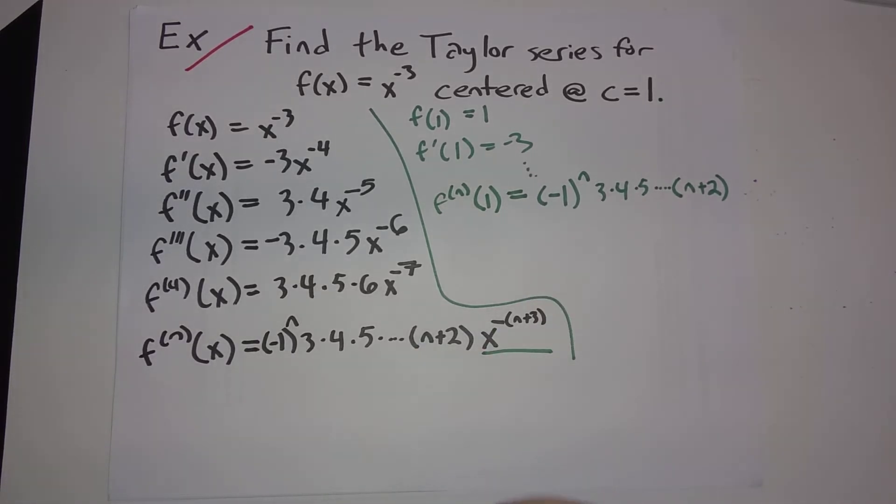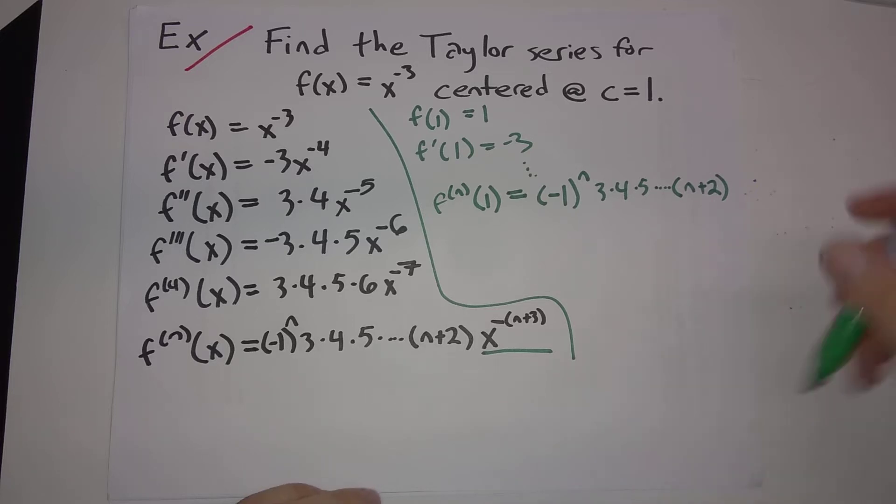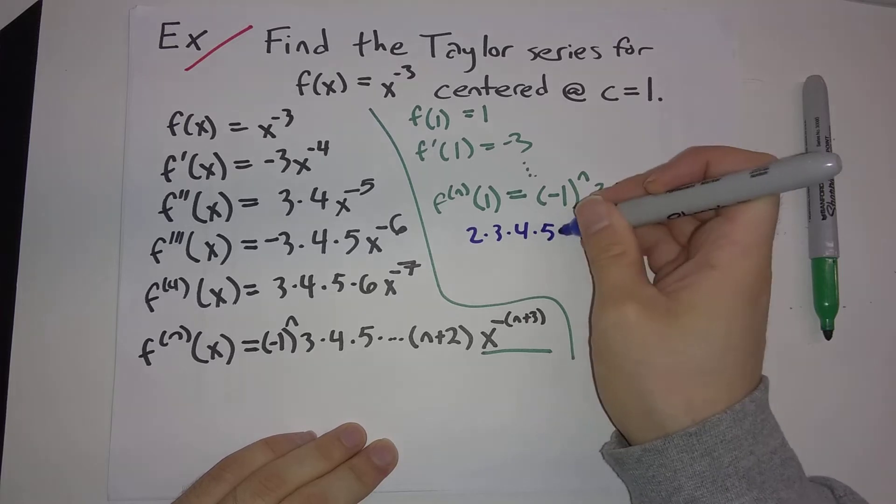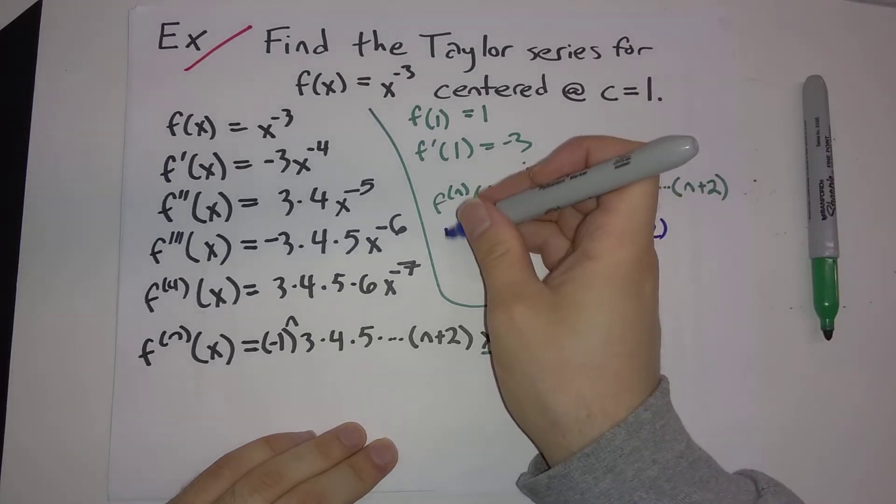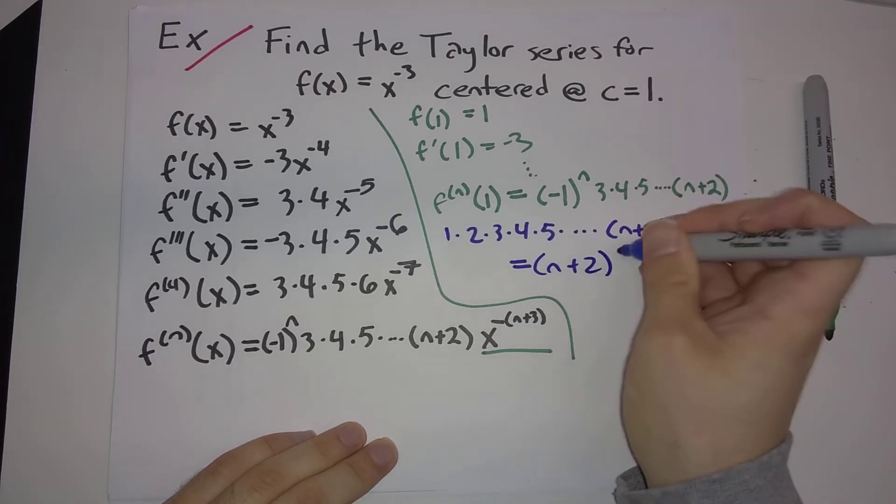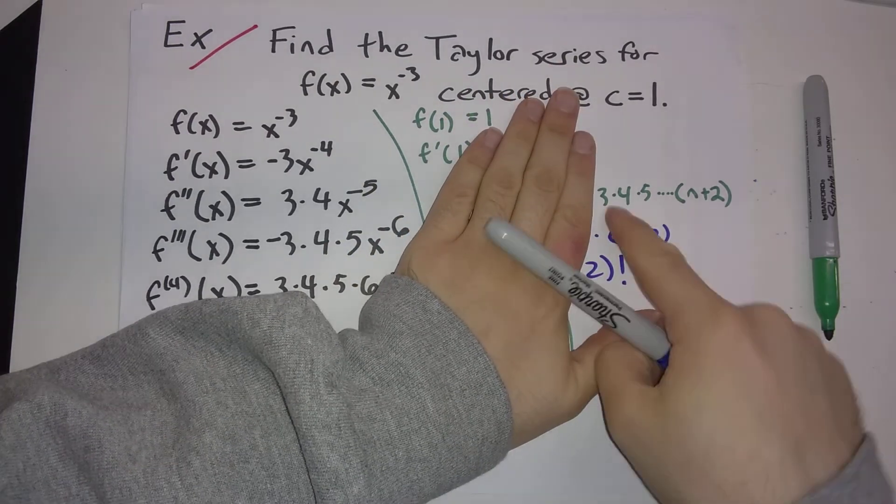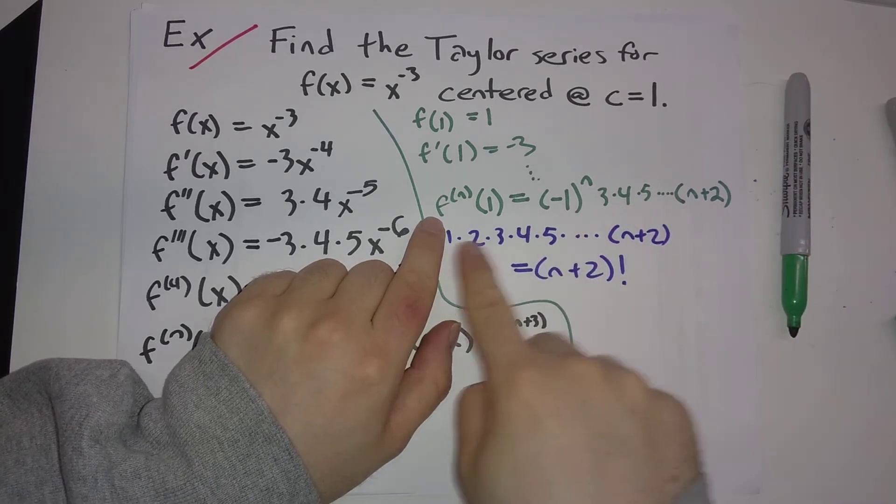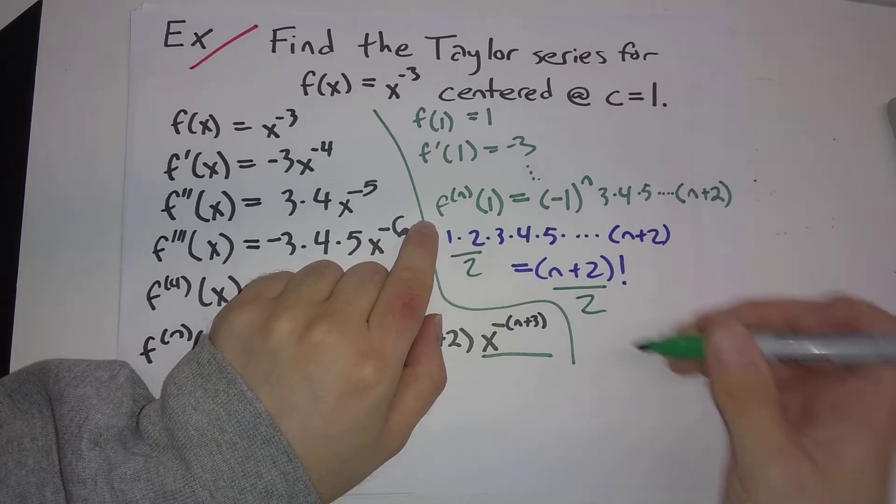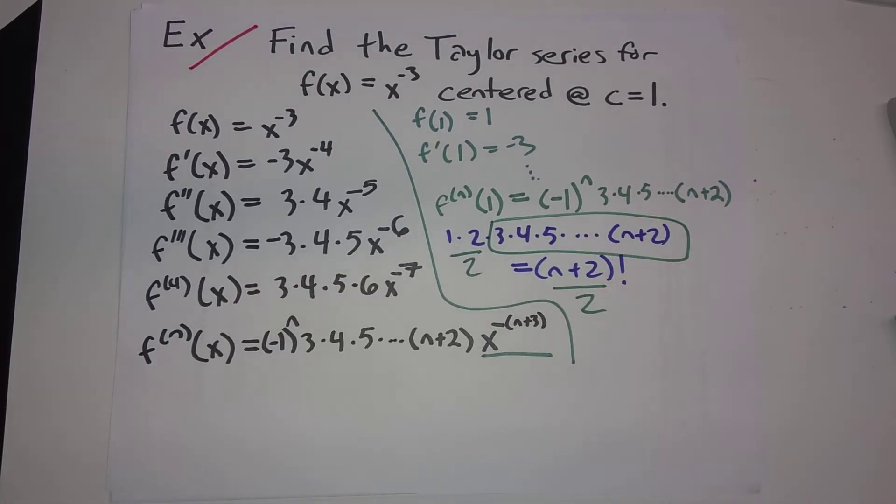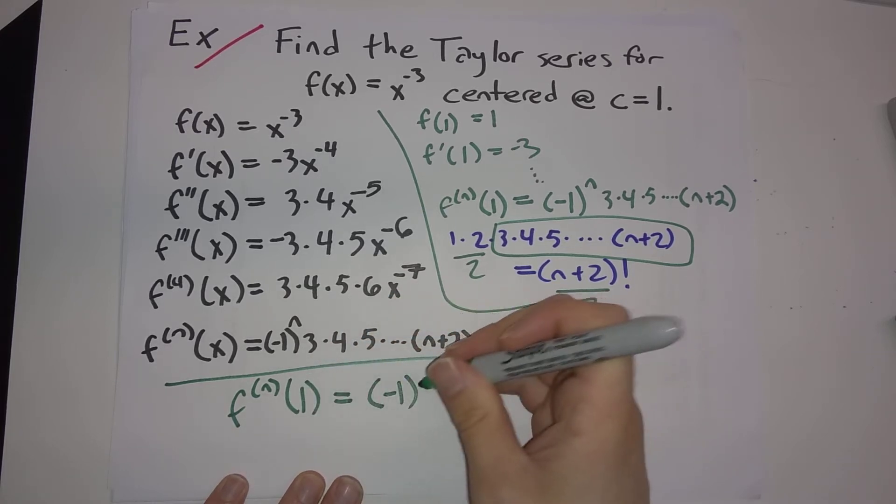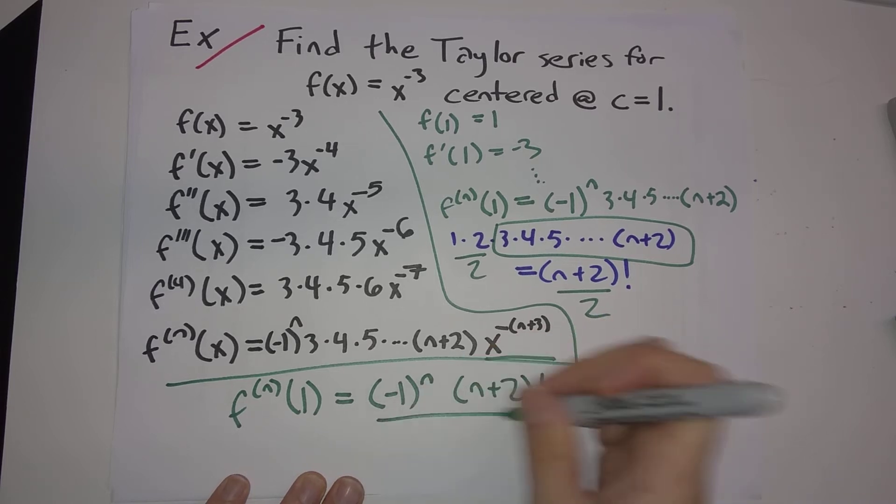So we should be thinking about factorials here. So realize, if we were to have 2 times 3 times 4 times 5 times dot dot dot all the way out to n plus 2, there's an implicit 1 at the start there. That's n plus 2 factorial. So, ignoring this minus 1 to the n, these terms in here, this is n plus 2 factorial, but missing the 2. So if we divide this by 2 and we divide this by 2, we get exactly the product here from 3 all the way out to n plus 2. So our final way of writing the nth derivative evaluated at 1 is going to be minus 1 to the n times n plus 2 factorial divided by 2.